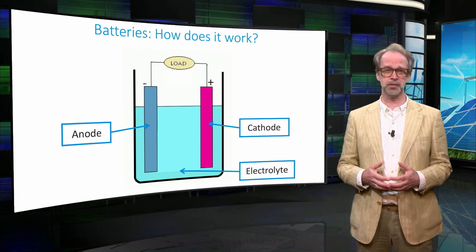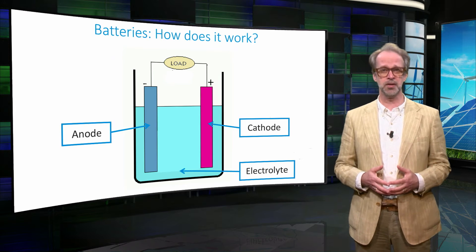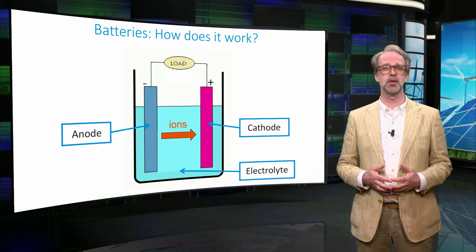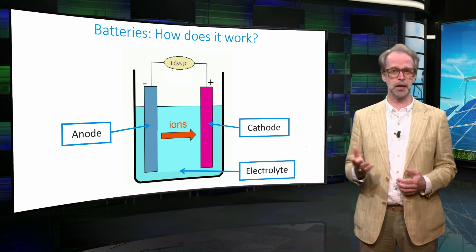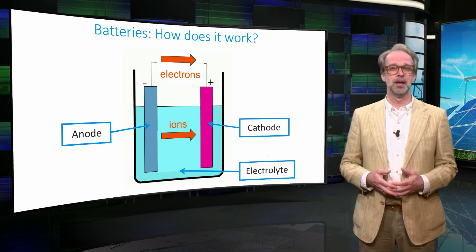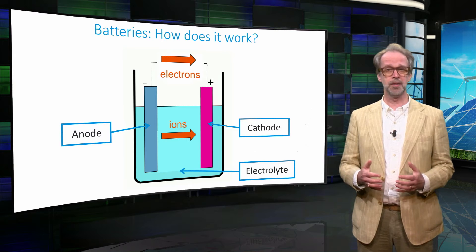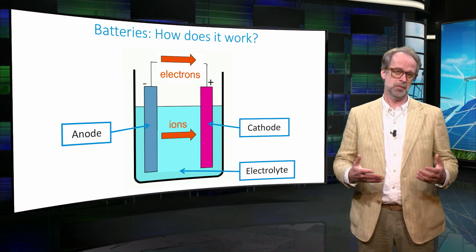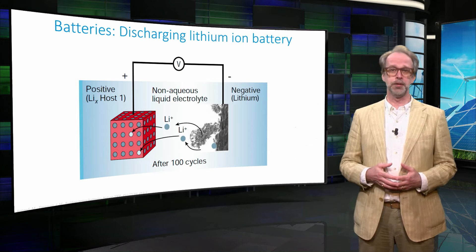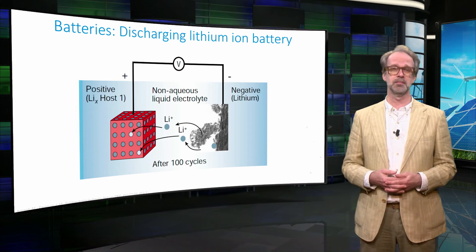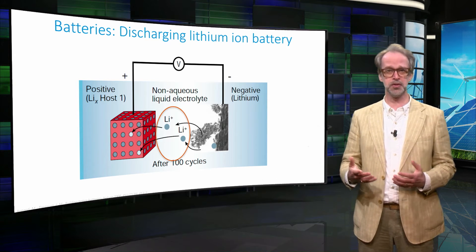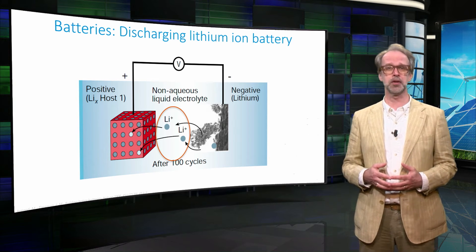On discharging the battery, at the anode a chemical reaction takes place that releases a positive ion to the electrolyte. This ion travels through the electrolyte while simultaneously an electron is released to the external circuit to provide power. The electron and the ion recombine again at the cathode surface. On charging the battery, the reverse occurs. This process is illustrated by the picture of the most simple version of the lithium-ion battery. On discharging, positive lithium ions from the lithium metal anode dissolve in the electrolyte, while electrons are released to the external circuit.